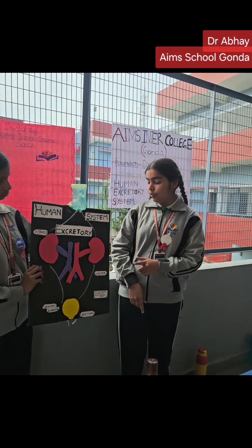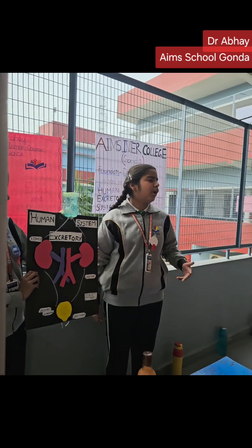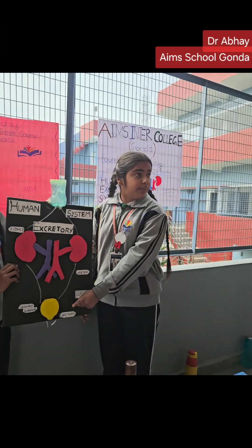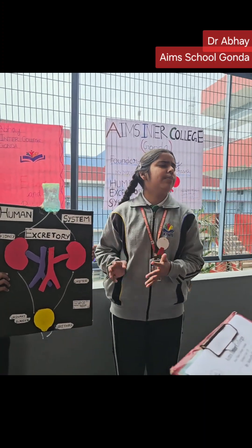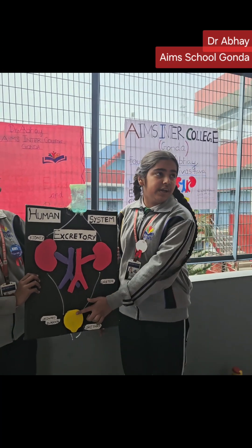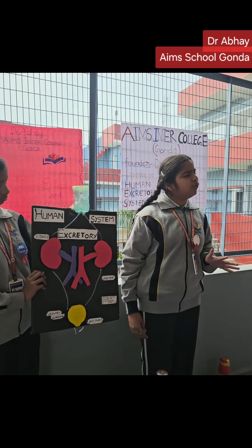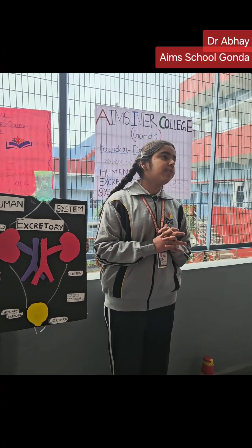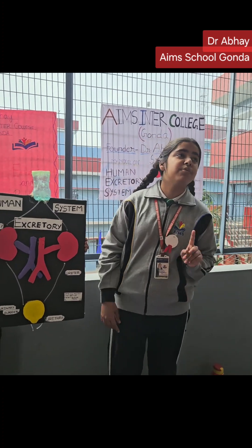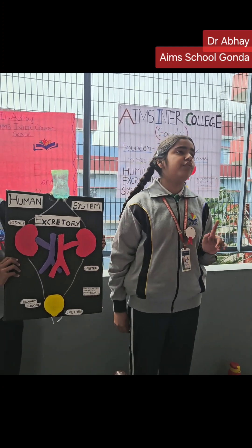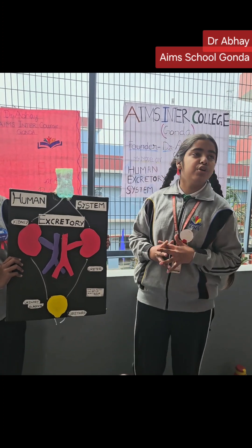Now I am going to tell you about ureters. There are two tubes called ureters which connect each kidney with the bladder. They carry urine from the kidney to the bladder. Now I am going to tell you about the urinary bladder — it is a balloon-like organ that collects urine before it is excreted out of the body. Now I am going to tell you about the last organ of this system, which is the urethra — a tubular organ through which urine is excreted out of the body.